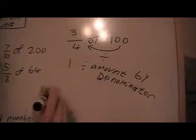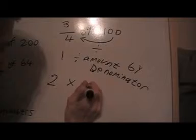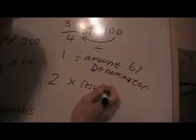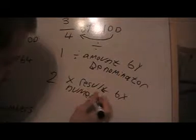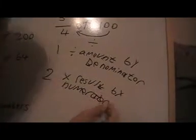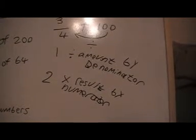Then step two is to times the result by the numerator. Okay, so that's the method. That's how we do this.